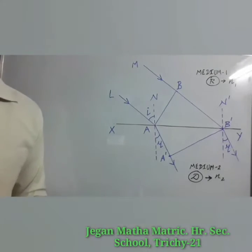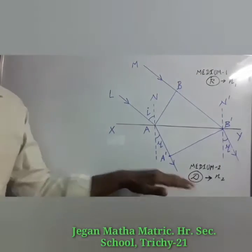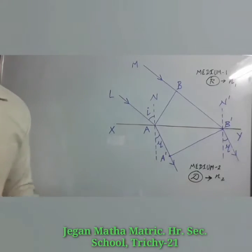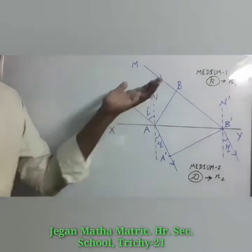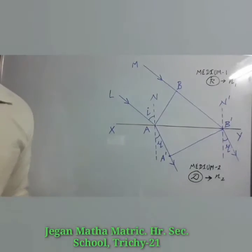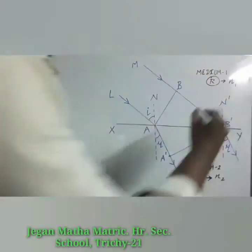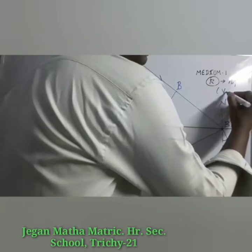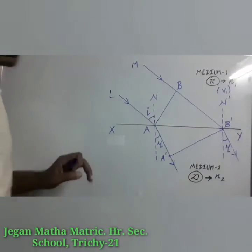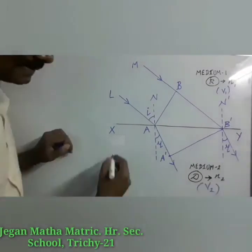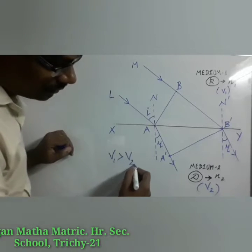As refraction happens from rarer medium to denser medium, the speed of light is v1 and v2 before and after refraction respectively. So light is traveling with velocity v1 in the rarer medium and with velocity v2 in the denser medium, meaning v1 is greater than v2.